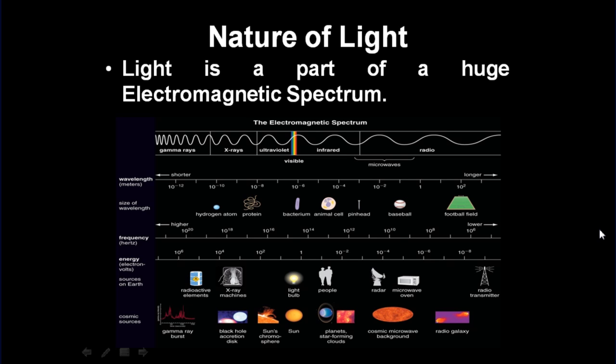What is the nature of light? Light is a part of a huge electromagnetic spectrum. The electromagnetic spectrum is a collection of all the electromagnetic waves. Here we see the collection of all the electromagnetic waves in nature.